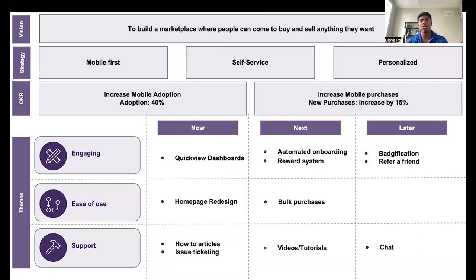Let's take an example of an e-commerce marketplace. Their vision is to build a marketplace where people can come to buy and sell anything they want. So they believe that their key strategies are being mobile first, complete self-service, and a more personalized experience for the users. This is how they plan to achieve their vision. Their feedback and past data showed that they are facing challenges with their product adoption, their mobile purchases, and many more challenges. But they want to focus on the above two outcomes, which is how can they improve their adoption to 40% and how can they increase their mobile purchases by 15%. That's the outcome they want to achieve.